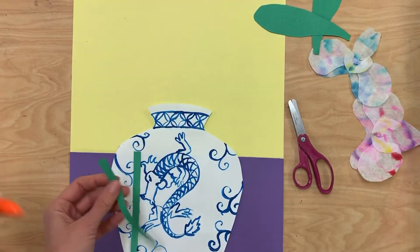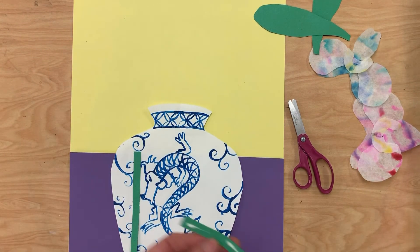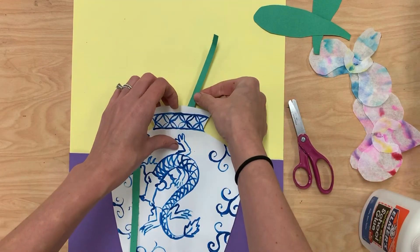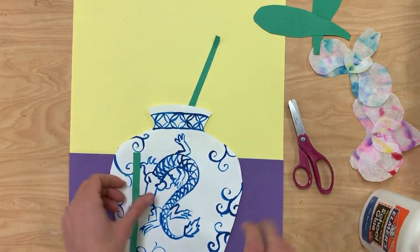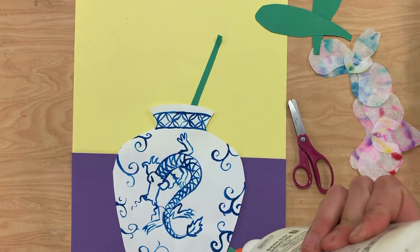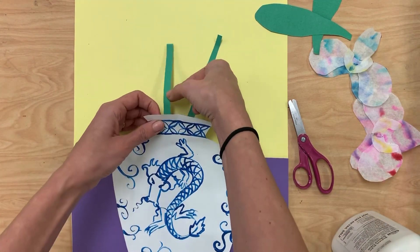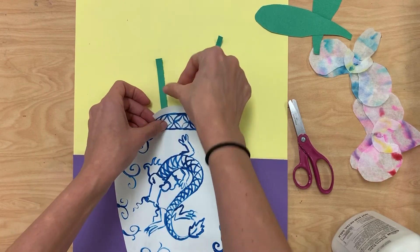I can go ahead and add my stems inside. So I'll stick this one in here and the other one might go on the other side. Maybe I'll even have them a little bit different heights to make it more interesting.